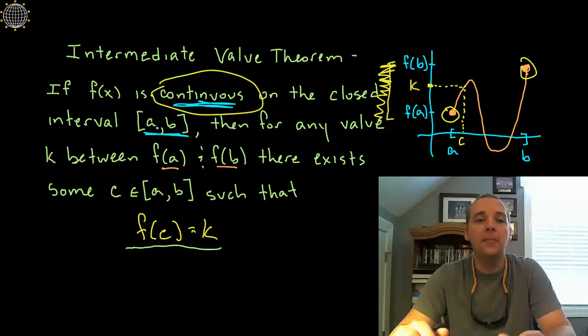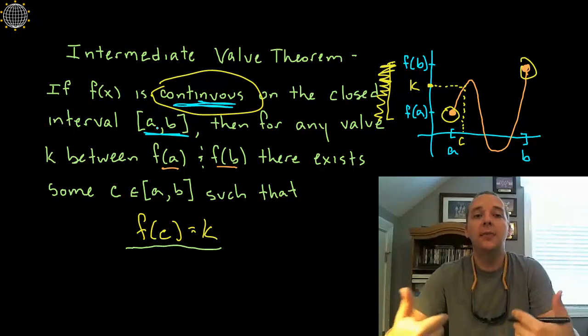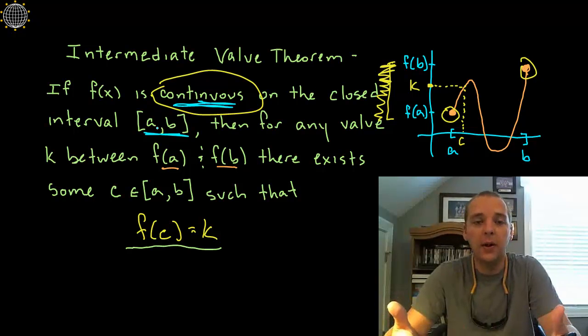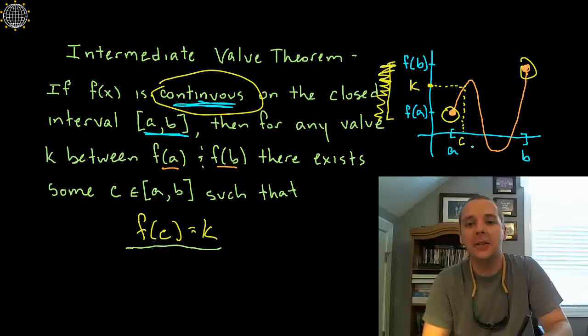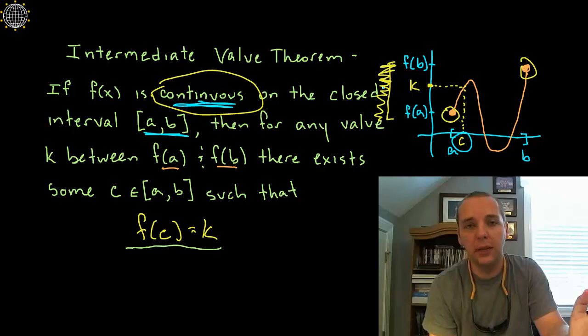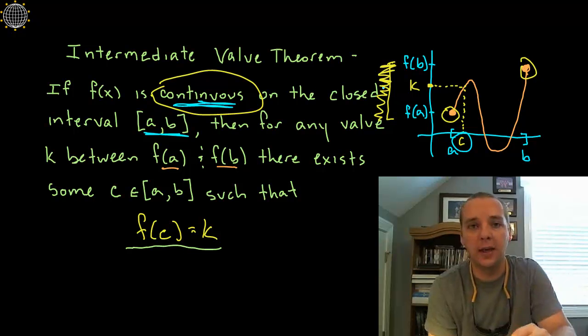But then there is usually a part b to where it says okay, if the intermediate value theorem is applicable, then what would be the c value that would satisfy the intermediate value theorem for a blank k value, and they will provide you a k.